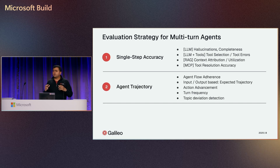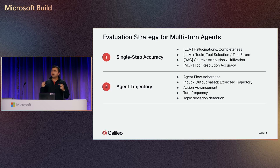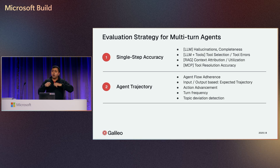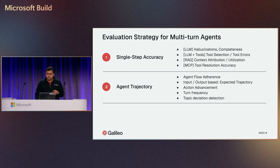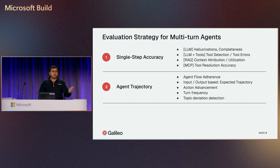There's agent trajectory as well. The more complex your agent gets, these metrics are going to be very key when creating tests and evaluation metrics. Agent flow adherence: is the agent adhering to a good pattern or flow? Certain inputs and outputs warrant certain steps to be called early on — that's the expected trajectory metric. There's action advancement: in the planning stage, is the agent getting stuck in back and forth, asking the same random questions again and again, or is it actually progressing towards the goal? Turn frequency: is the agent taking 20 turns to complete my planning step, or is it doing it in two to three steps? Measuring efficiency there is important.